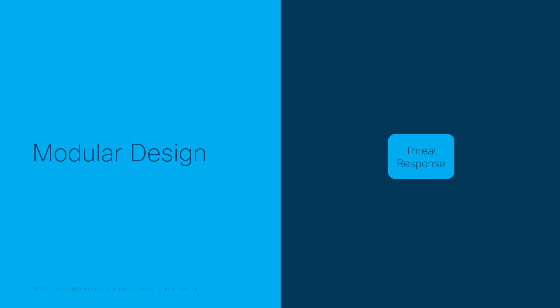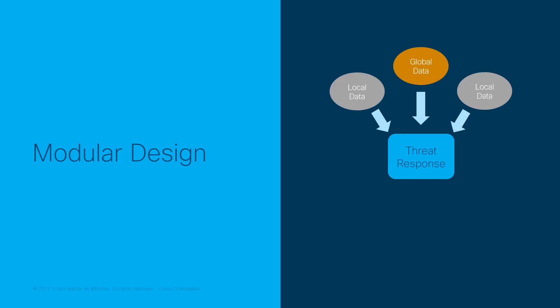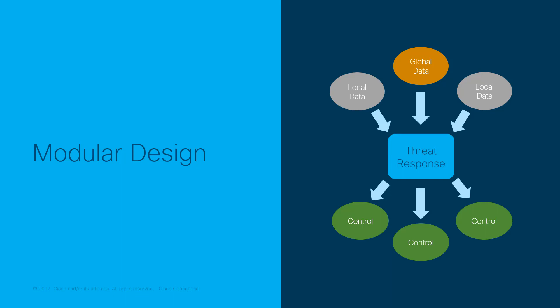Each module handles one API — some from external third-party intelligence providers, some from internal monitoring systems in your network or in cloud services that you use, and some for response capabilities offered by control technologies. And of course, some provide both or even all three.